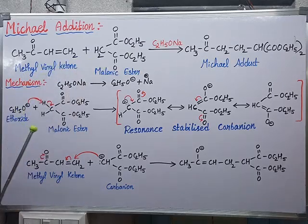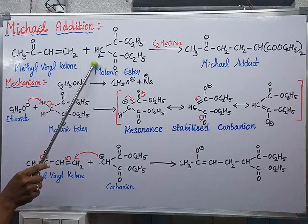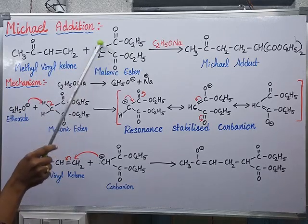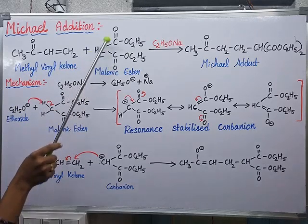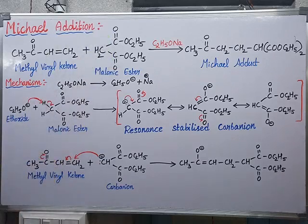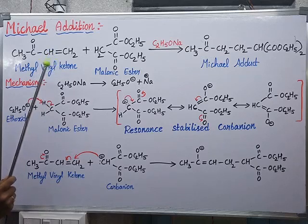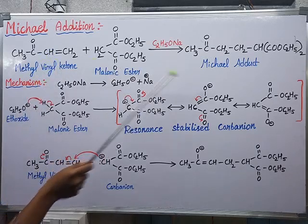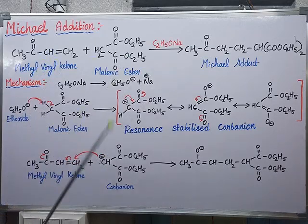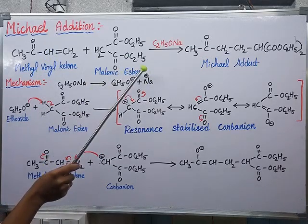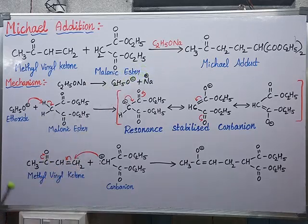This alpha-beta unsaturated carbonyl compound is reacting with an active methylene compound. The active methylene compound has a methylene group present between two electron-withdrawing groups. This active methylene compound reacts with the alpha-beta unsaturated carbonyl compound to give an addition product, called the adduct, in the presence of a base.